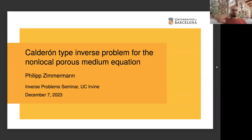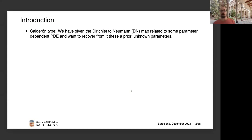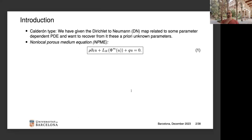I will talk about a Calderón-type inverse problem for the non-local porous medium equation. For most of you it's clear what I mean by a Calderón-type inverse problem: we have a Dirichlet-to-Neumann map related to some parameter-dependent partial differential equation, and we want to recover from it a priori unknown parameters. What I mean by the non-local porous medium equation may not be clear, so I want to introduce it here in equation 1.